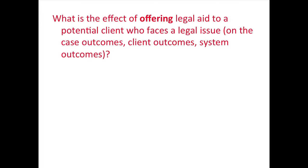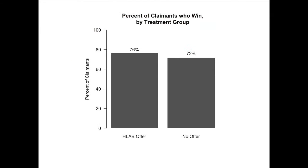We're looking at the outcomes of the case, the outcomes for the client — whether they actually get their money — and the system, such as whether we're helping make the unemployment system run more smoothly. Looking at the two groups, 76% of the people who were offered help from HLAB won their cases, but also 72% of the people who were not offered HLAB help won their cases. In other words, there's only a four percentage point difference observed between the win rates among those offered help and those who weren't.